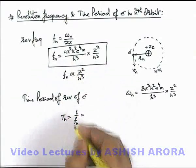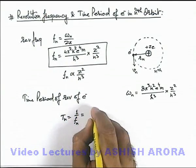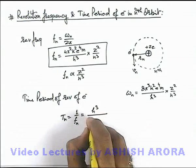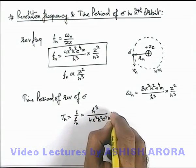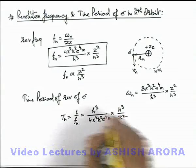And if we substitute the values over here, this will be h³ over 4π² k² e⁴ m multiplied by n³ by z².